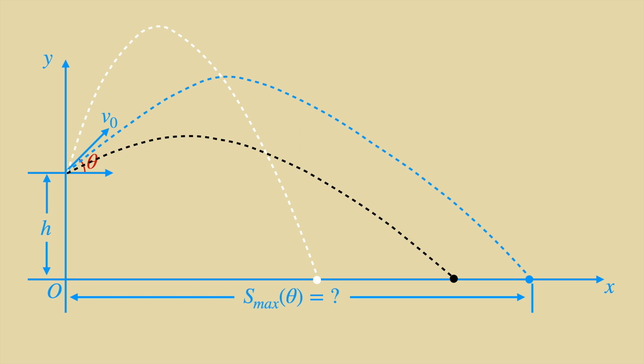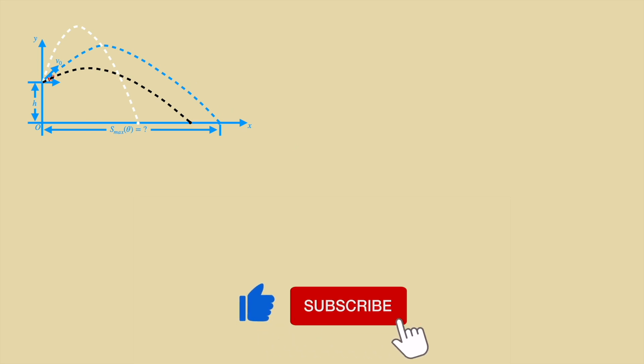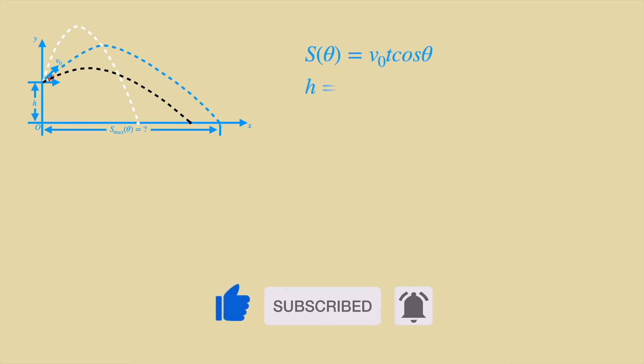Okay, let's see how to prove this problem. Suppose the moving time is t. So we will have the following two equations according to the physical knowledge we have learned in school.